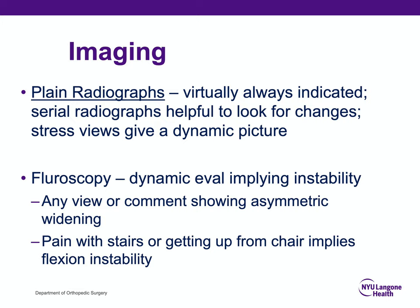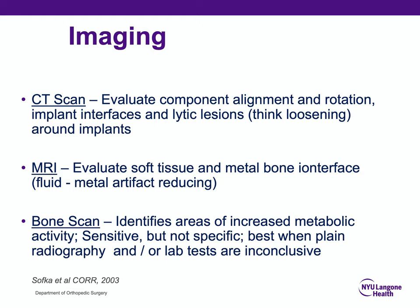Plain radiographs are virtually always indicated, and serial radiographs help you look for changes, while stress views can give a dynamic picture. If a painful total knee arthroplasty is presented in a narrative and x-rays have not been done, this should be your first step. Fluoroscopy can reveal instability by showing dynamic images, and asymmetric widening or a narrative describing pain with stairs or getting up from chairs can imply instability as a diagnosis.